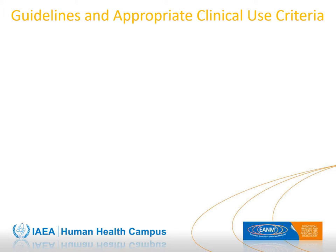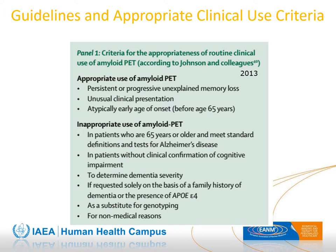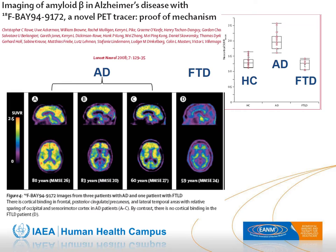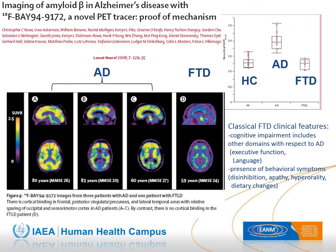Guidelines and appropriate use criteria for amyloid PET have been proposed. Appropriate use is suggested in cases of persistent or progressive unexplained memory loss, unusual clinical presentation, and atypically early age of onset before age 65. Amyloid PET can also support differential diagnosis between Alzheimer's disease and frontotemporal dementia, as FTD is negative for brain amyloidosis, which is helpful in atypical presentations.